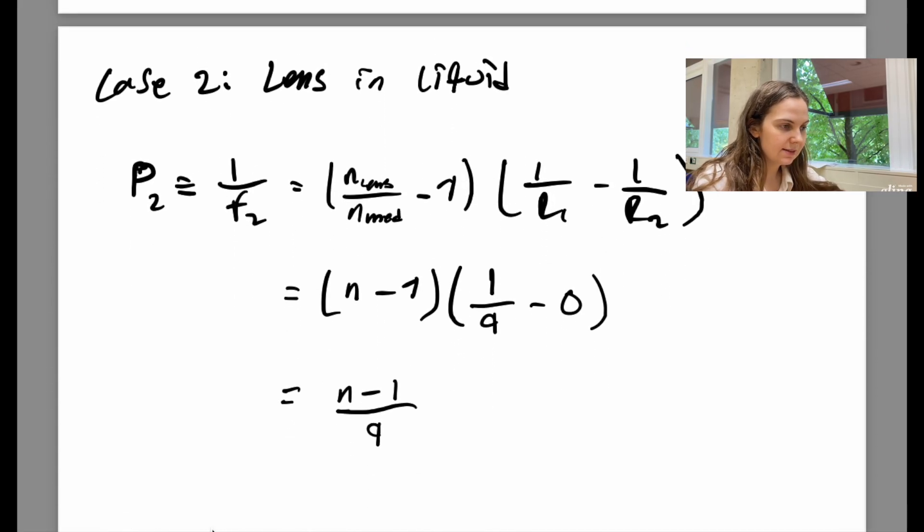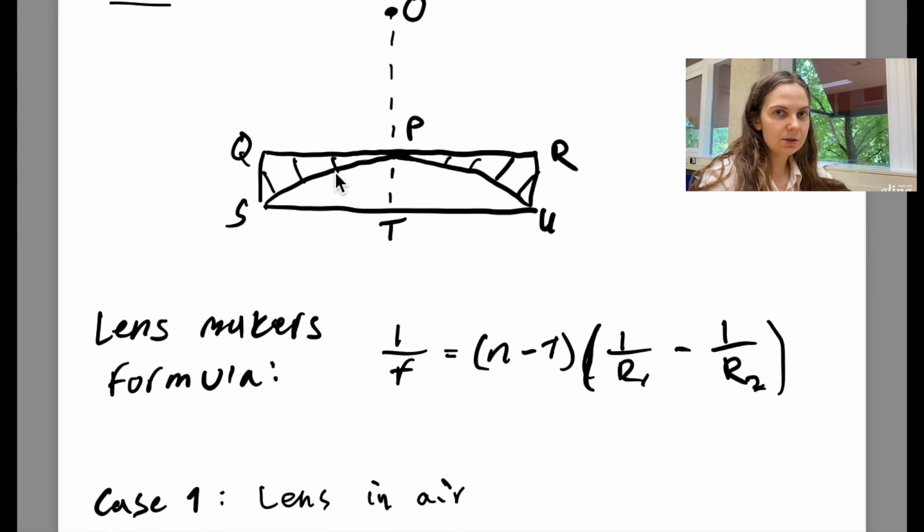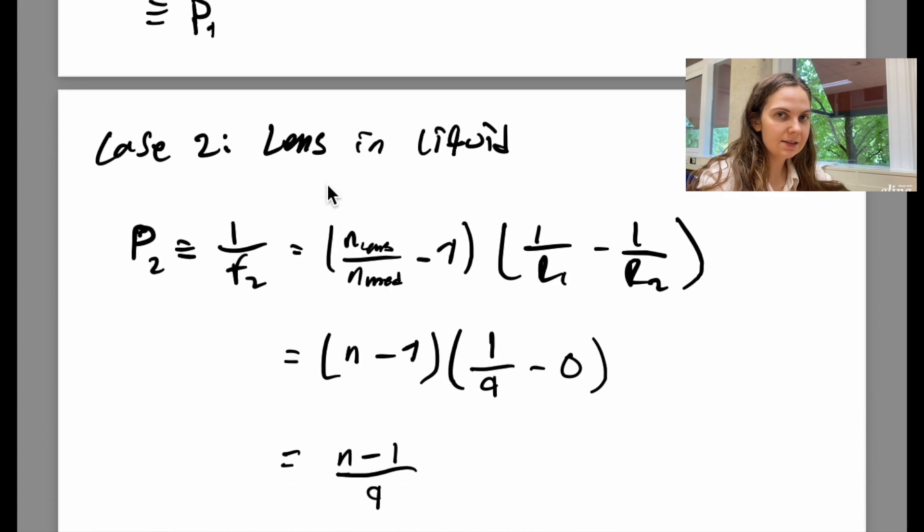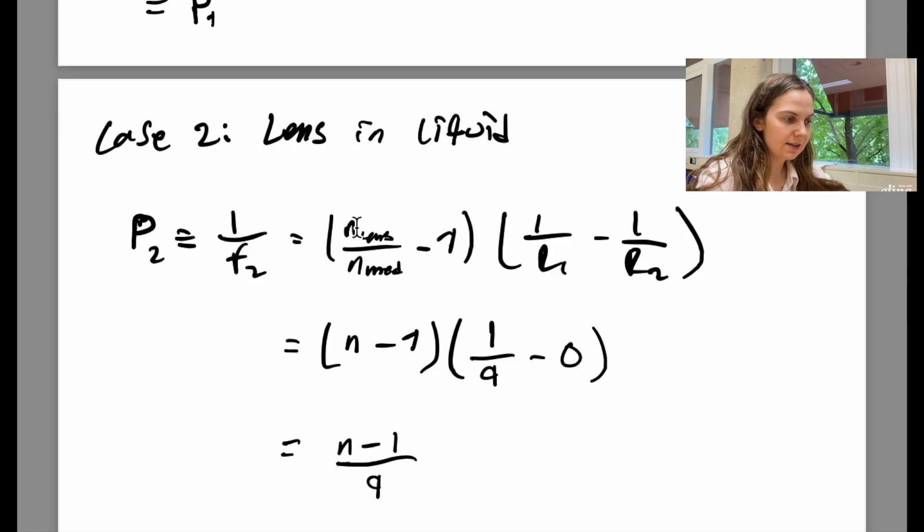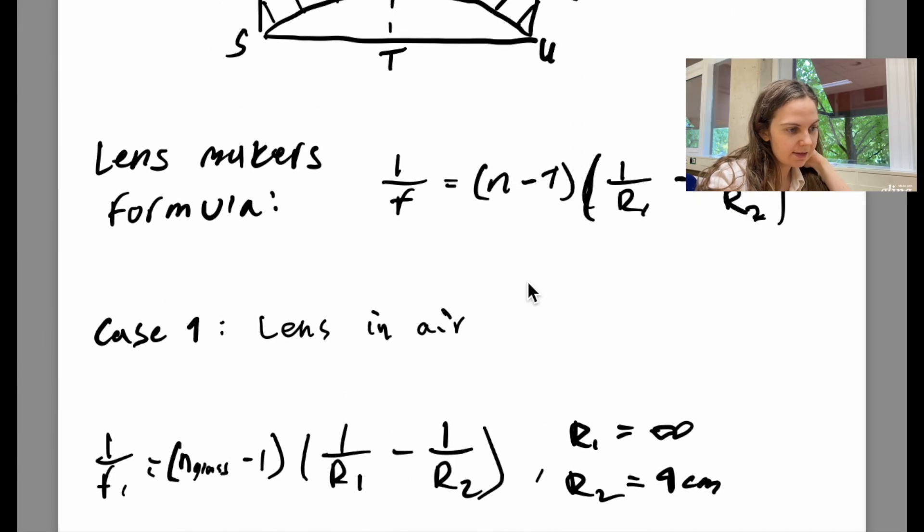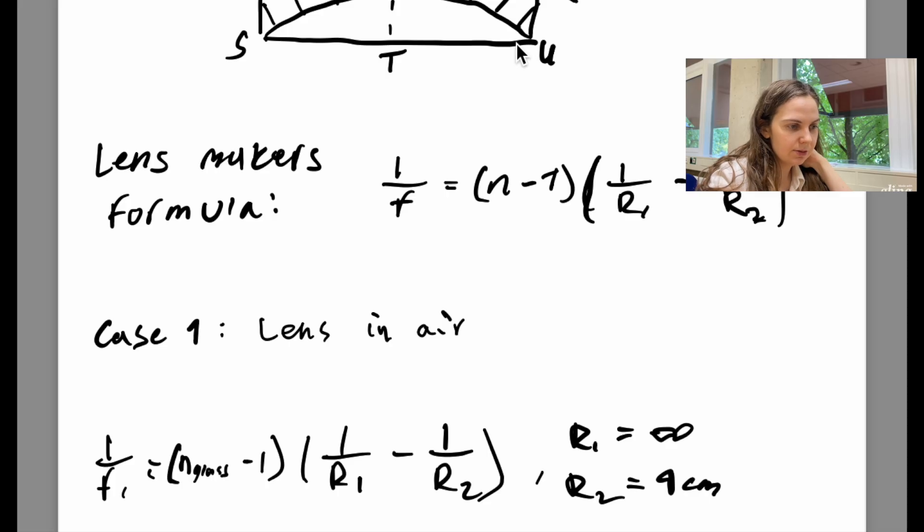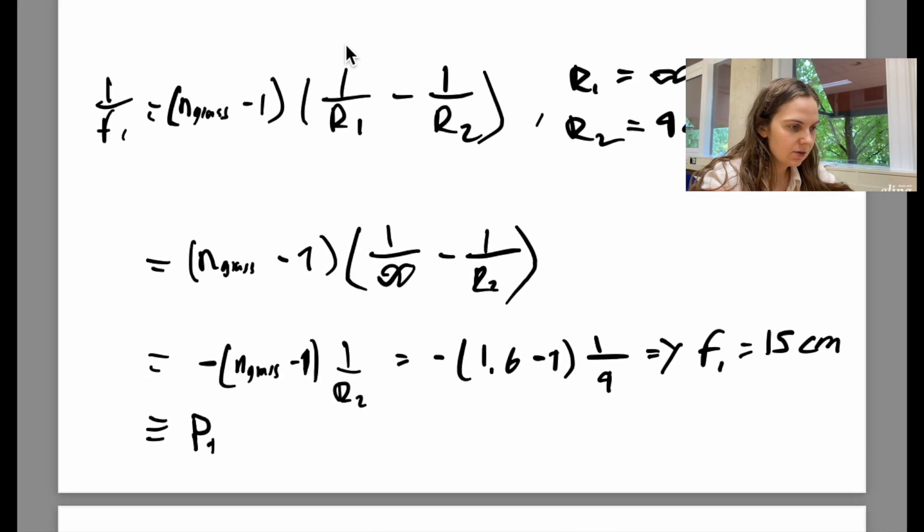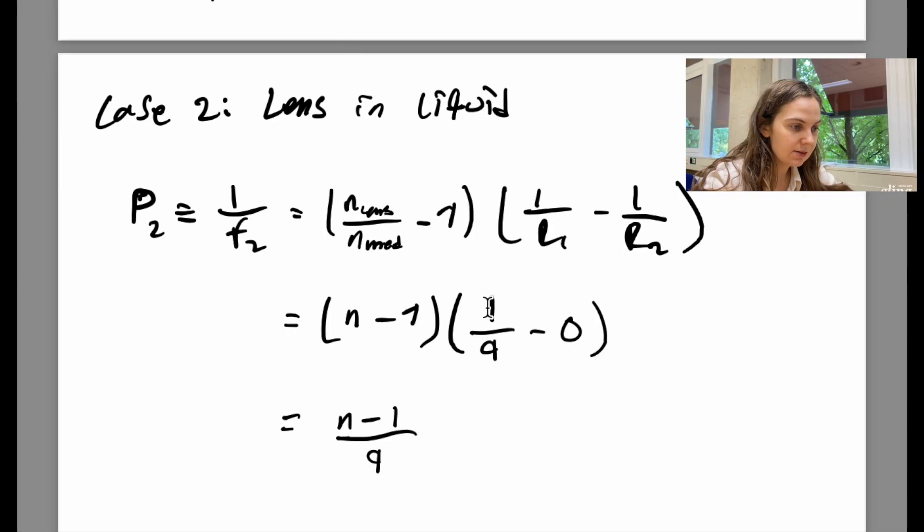So in the second case, we have the light rays traveling through this lens, but also being in liquid. So the lens maker's formula changes a bit because we now have the refractive index of this lens over the refractive index of this medium. And the way I interpret it in the problem is that this ratio is just this refractive index N that we are supposed to plug in a few different values for. So in this case, we have that R1 is now the radius of curvature of this curved lens, and we have that R2 is the radius of curvature of this plane surface. So like in the previous case, we get that this term is just 0, and the other one is just 1 over 9. So we get that the optical power or 1 over the focal length is just given by N minus 1 over 9.